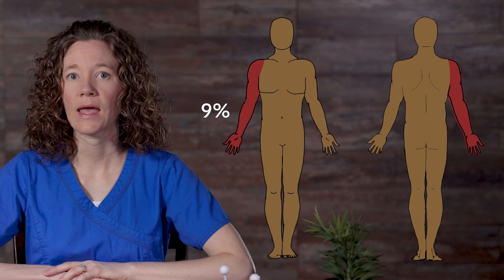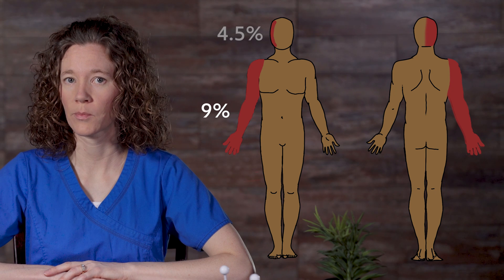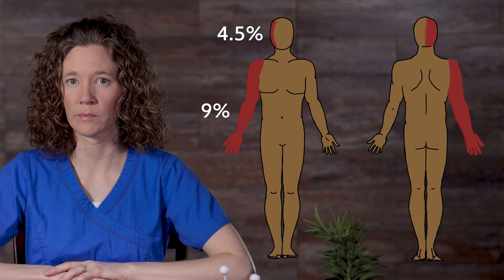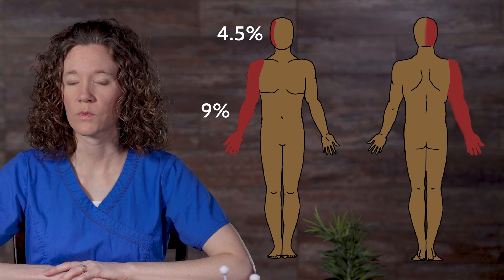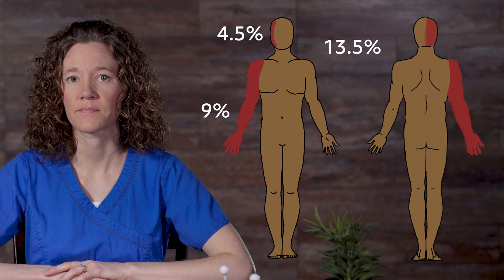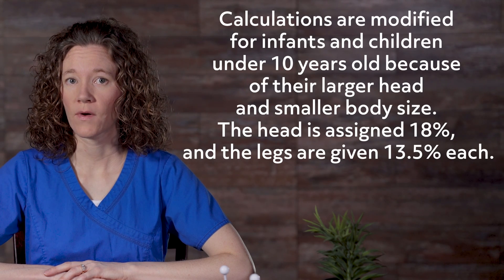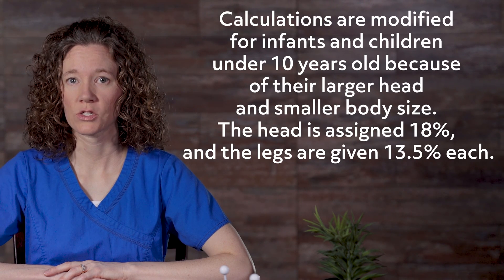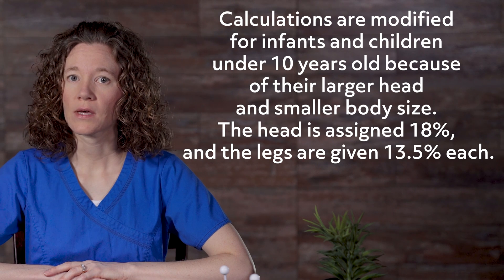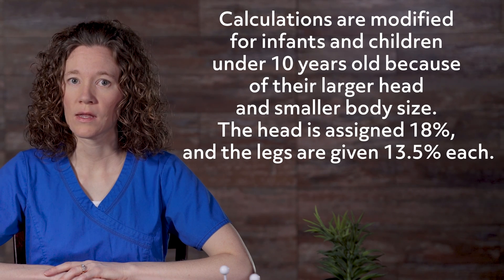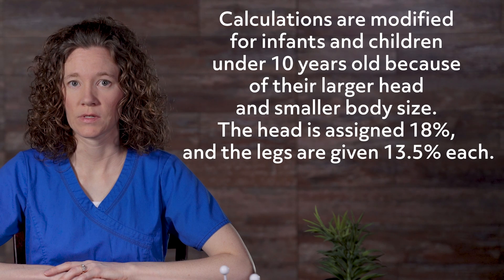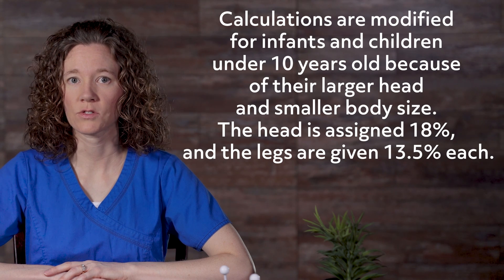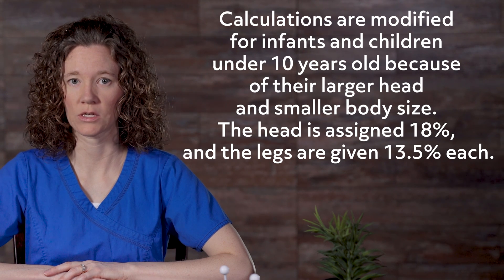If their entire right arm, 9%, and the right side of their head, 4.5%, were burned, the amount of body surface area affected would be 13.5%. Calculations are modified for infants and children under 10 years old because of their larger head and smaller body size. The head is assigned 18%, and the legs are given 13.5% each.